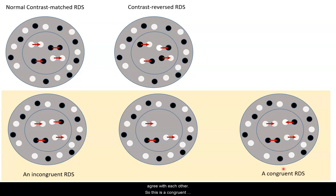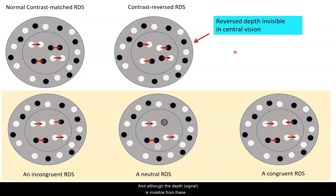If you just add noise, this is just a neutral random dot stereogram. And although this depth is invisible from these hetero pairs,